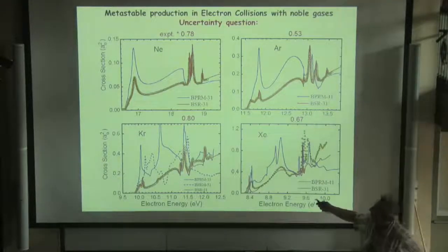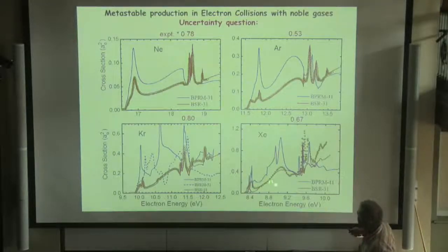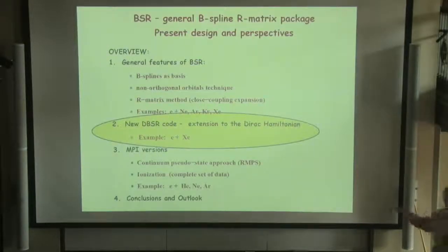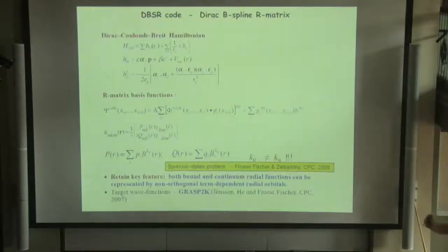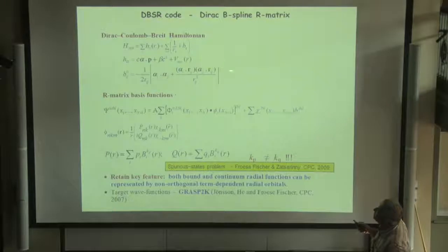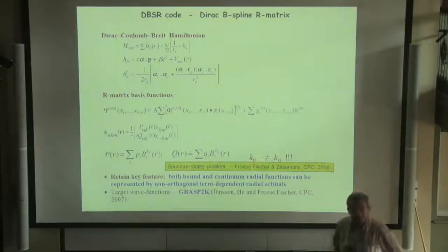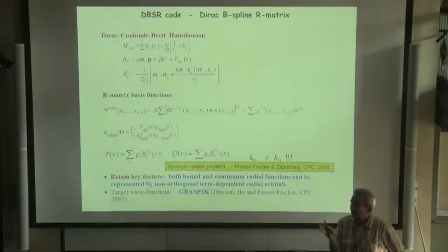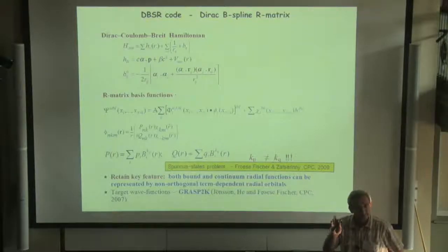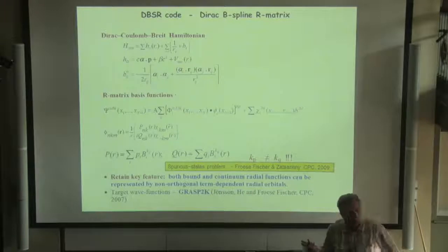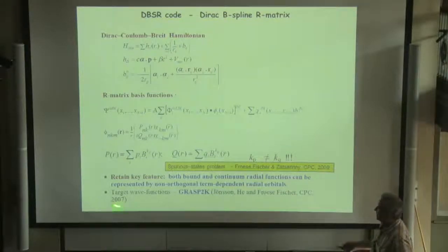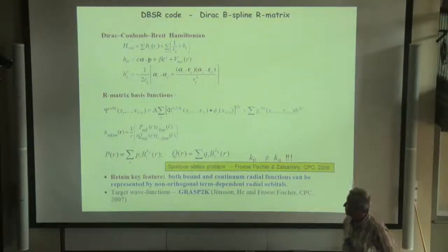So next step was to extend our code to Dirac Hamiltonian. This extension was rather straightforward. We use Dirac Hamiltonian. Now wave functions in JJ coupling, and we have two-component wave functions, and each function is expanded in B-splines in our method. But here we have only one problem. Because Dirac Hamiltonian in B-splines or any other finite element basis produces pseudo-states, we found a very simple practical solution using different gauges. In this case, pseudo-states disappear, and this also retains the key feature: bound Dirac Hamiltonian will be represented by non-orthogonal term-dependent Dirac Hamiltonian.